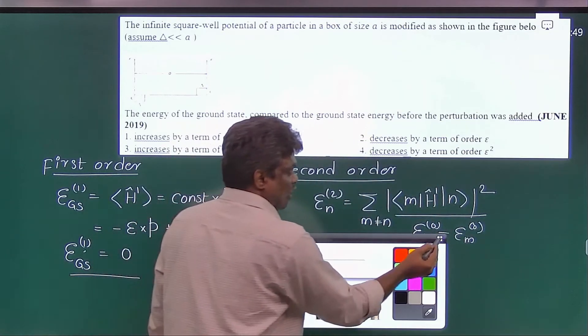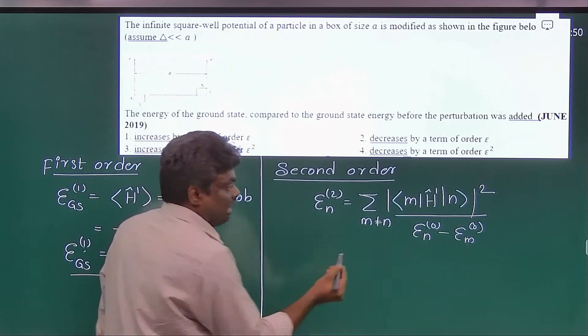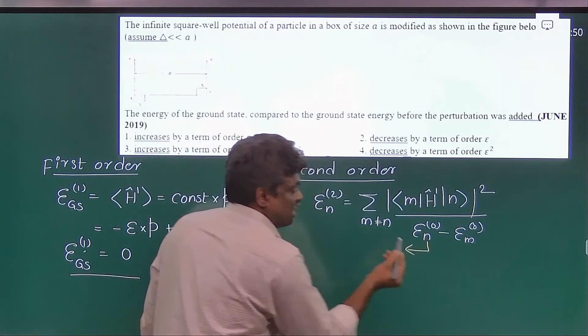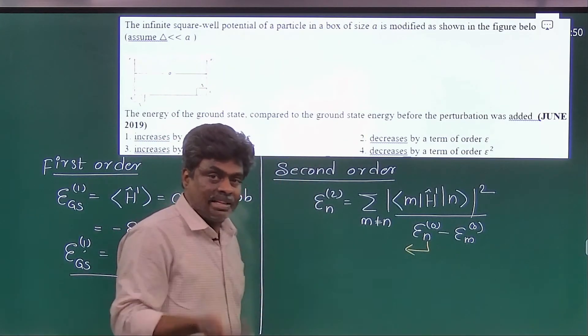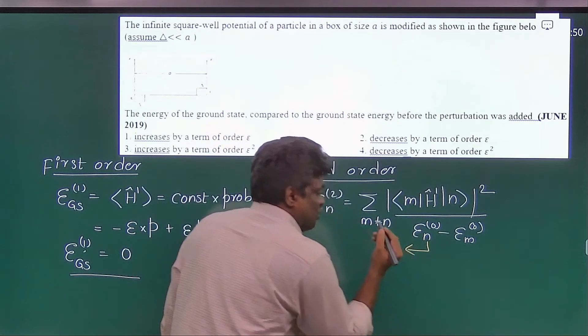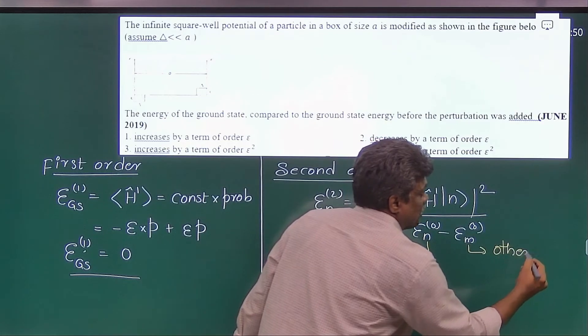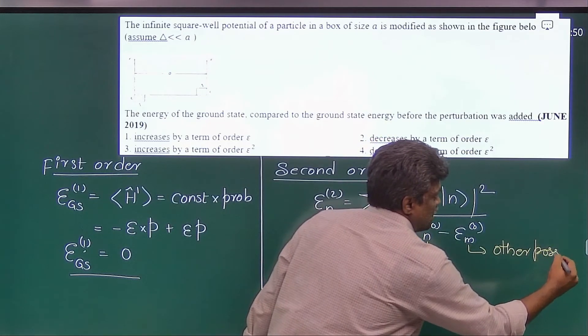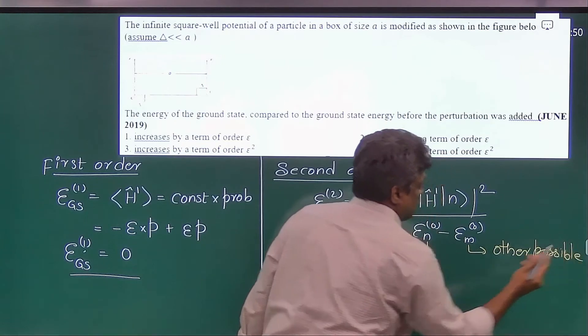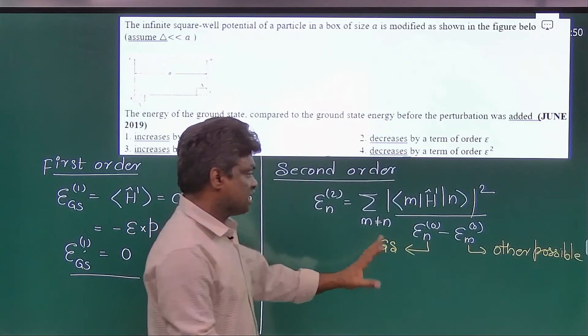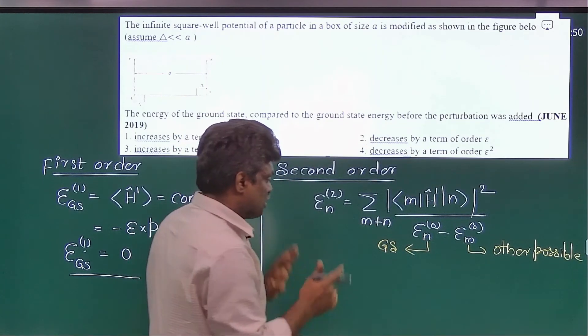Let us observe this denominator. Here this n stands for the state for which we are finding the correction. So here it is the ground state. This m stands for other possible states. You need not find any integration or any simplification here. Just observe carefully.